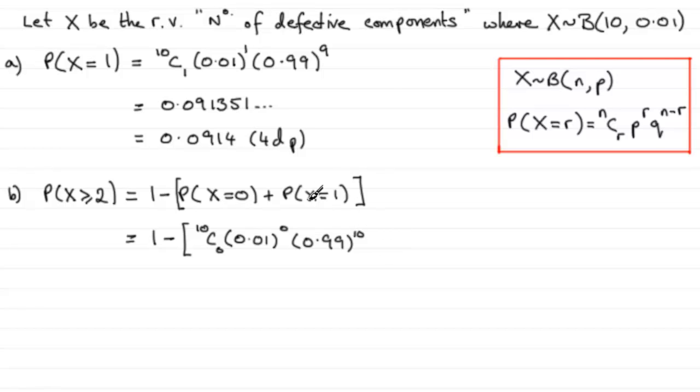And probability of x equaling 1, we've just worked that out up here. I'll take the unrounded value there though, 0.091351 and so on.